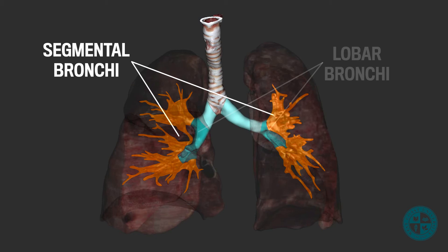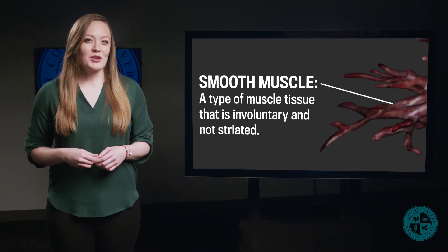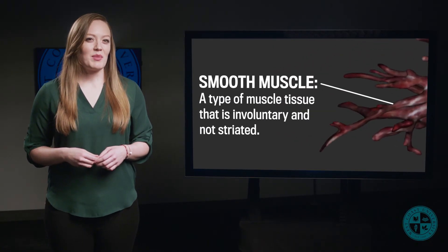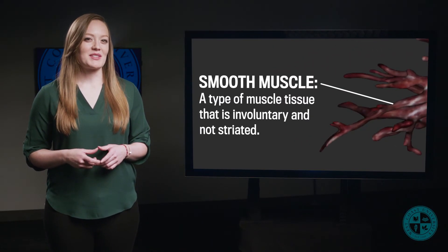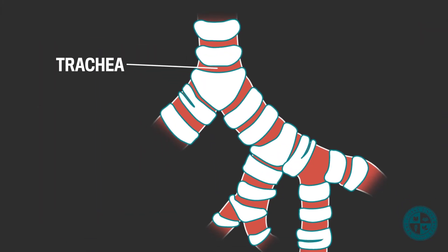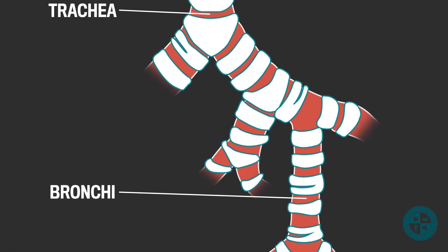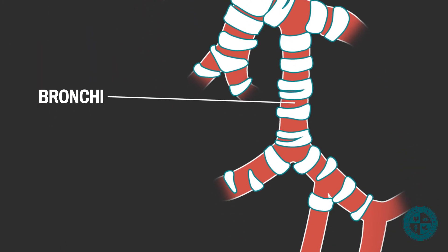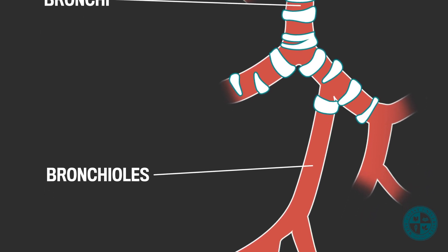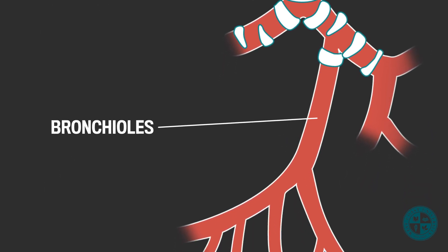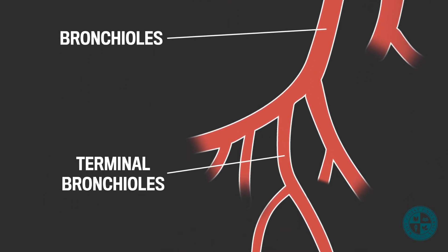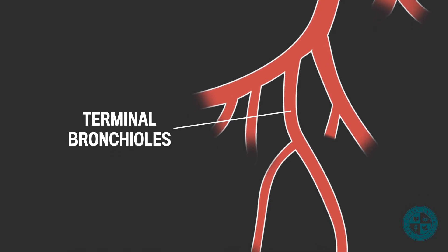It is important to note that the main bronchi have more cartilage than the lobar and segmental bronchi. As we get deeper and deeper into the bronchial tree, the cartilage slowly begins to disappear and is replaced with smooth muscle. If we continue to follow the segmental bronchi until they branch, we will see that each segmental bronchus branches into many bronchioles. Following the bronchioles, they will branch into the terminal bronchioles.